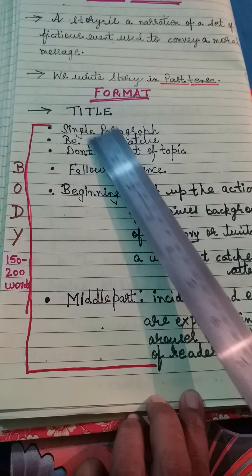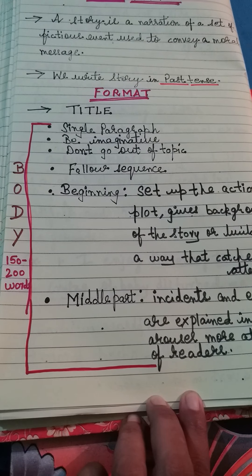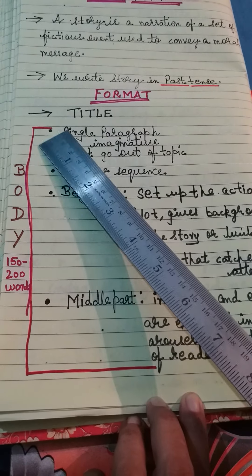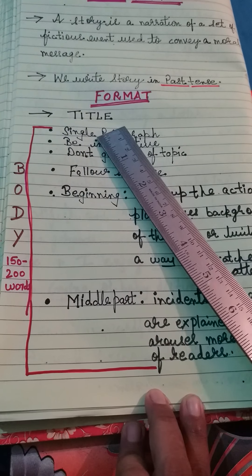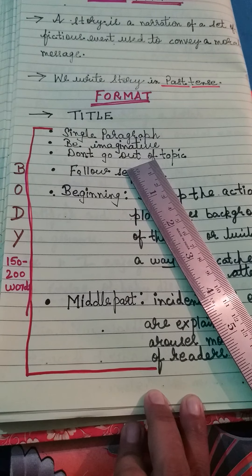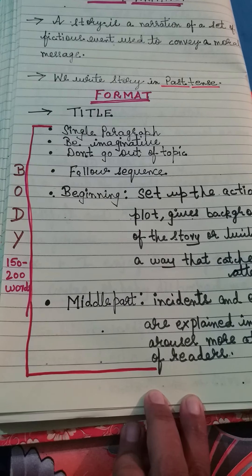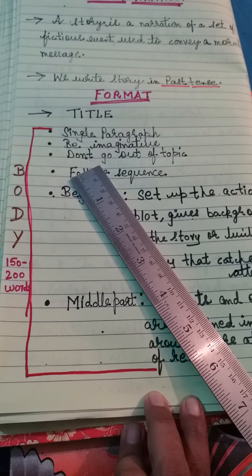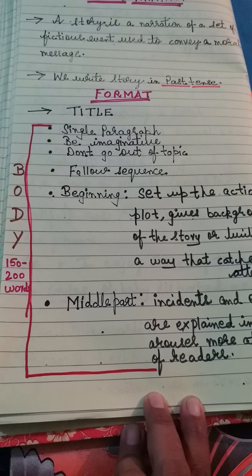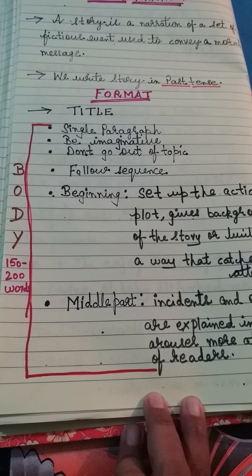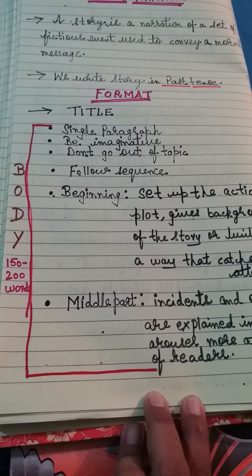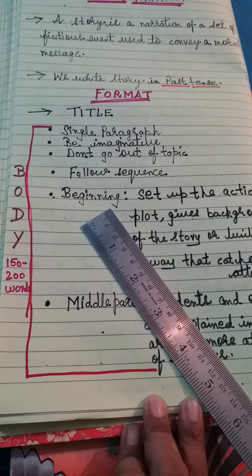Now let's look at the format for writing a story. I have made a box: first, the title; then the body. You have to be imaginative but stick to the topic — if the story is about an accident, write about the accident, not something else. You also need to follow a proper sequence.